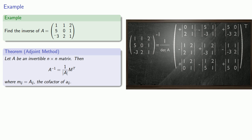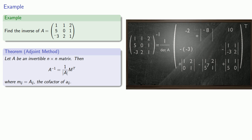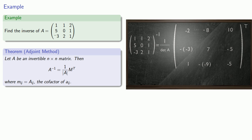We'll evaluate all of the determinants, take care of the signs to get our cofactors, and then transpose the resulting matrix. Remember, we can think about the inverse as being the transpose of the matrix of cofactors scaled by the determinant. So if we can figure out what that scaling factor is, we'll know what the determinant is.